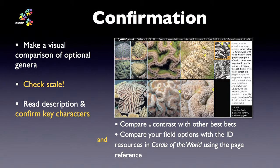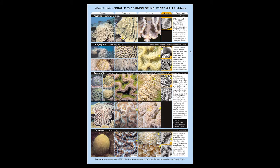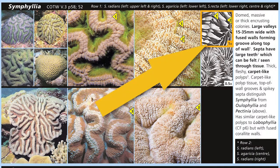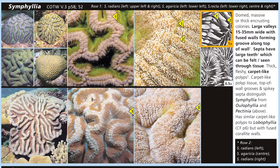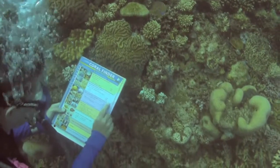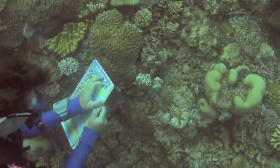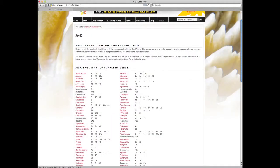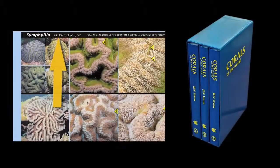Now it's time for confirmation. When working with lookalike pages, it also helps to use a simple three-step checklist. Step 1: compare and contrast the genera closely — learn to think and see the differences between corals using the same terms we met in the glossary. Step 2: check the scale is correct and that you haven't been seduced by the big close-up pictures. Step 3: read and confirm the character description. While you are learning, it is better to come home with several genus names to follow up, rather than shoehorning a coral into a name based on your limited experience. After the dive, you can compare your field options with the ID resources at the Coral Hub, or use the handy page reference to look it up in Corals of the World.